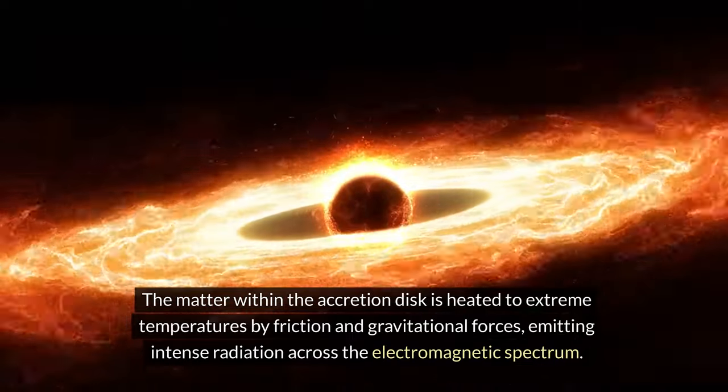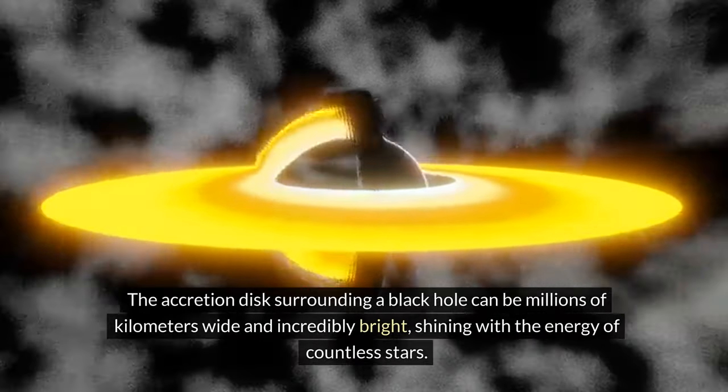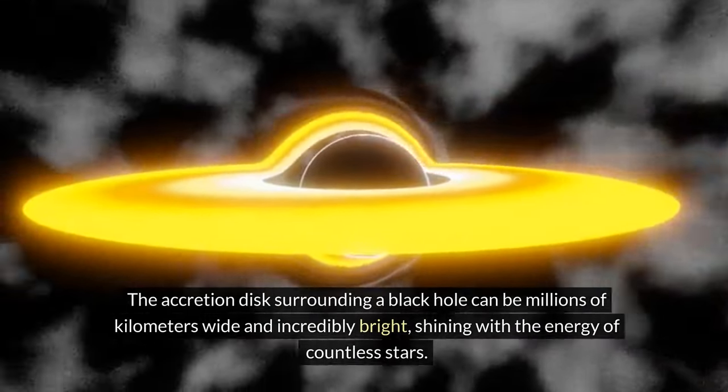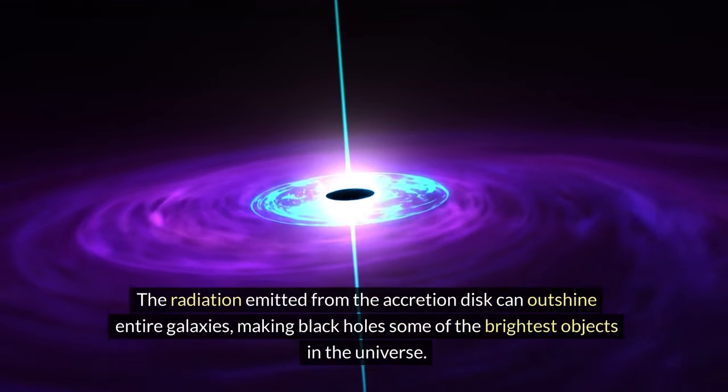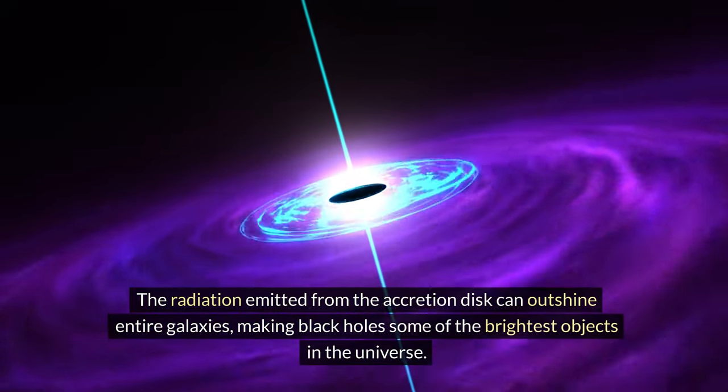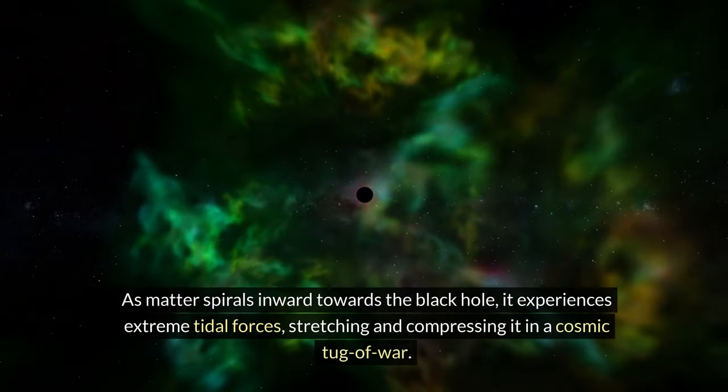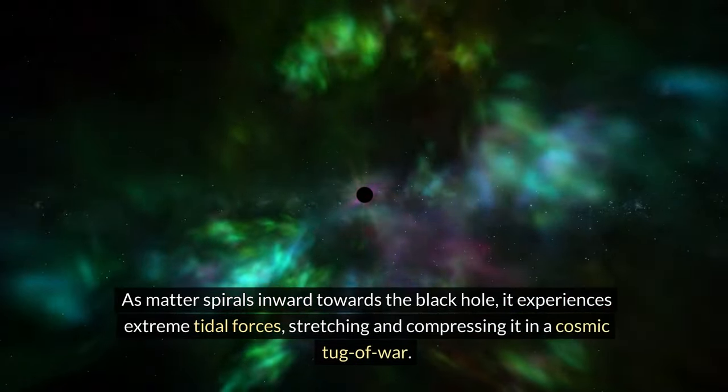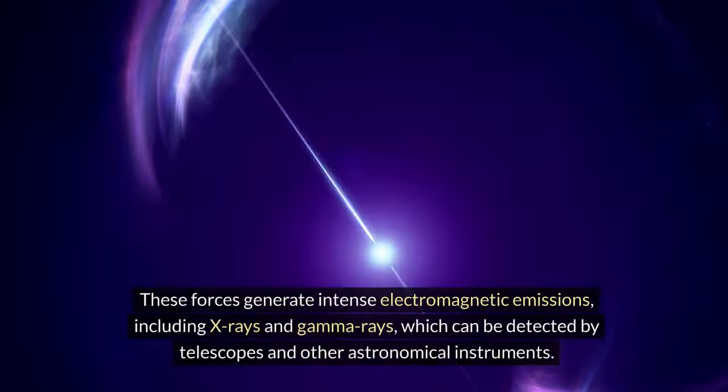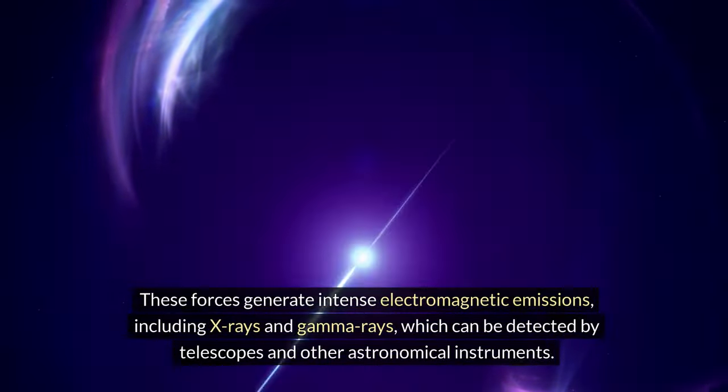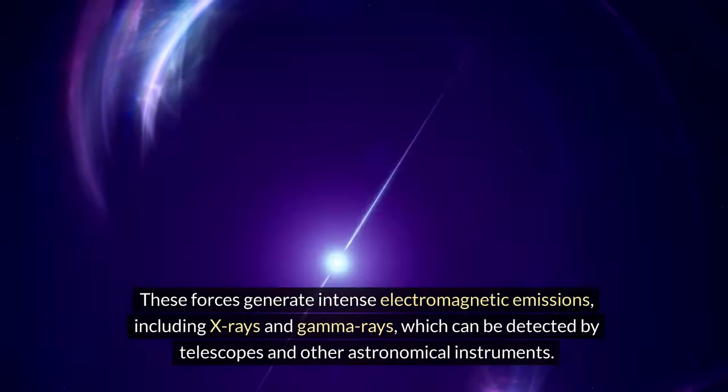The accretion disk surrounding a black hole can be millions of kilometers wide and incredibly bright, shining with the energy of countless stars. The radiation emitted from the accretion disk can outshine entire galaxies, making black holes some of the brightest objects in the universe. As matter spirals inward towards the black hole, it experiences extreme tidal forces, stretching and compressing it in a cosmic tug-of-war. These forces generate intense electromagnetic emissions, including X-rays and gamma rays, which can be detected by telescopes and other astronomical instruments.